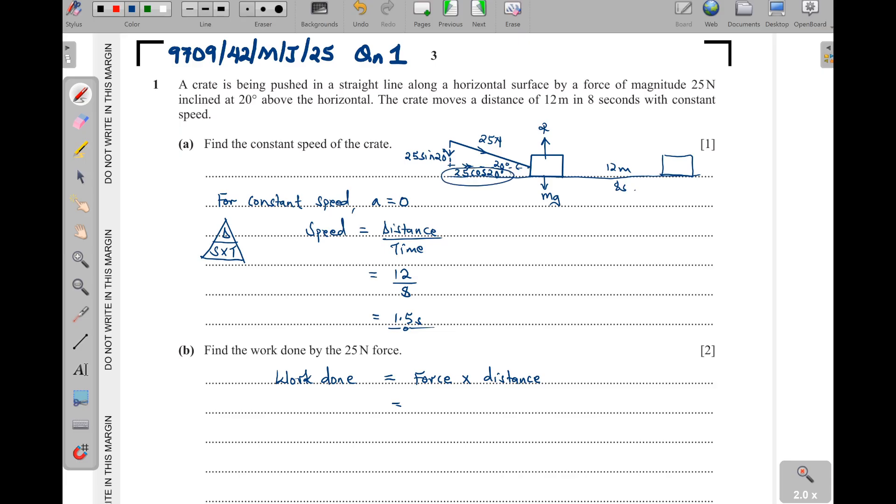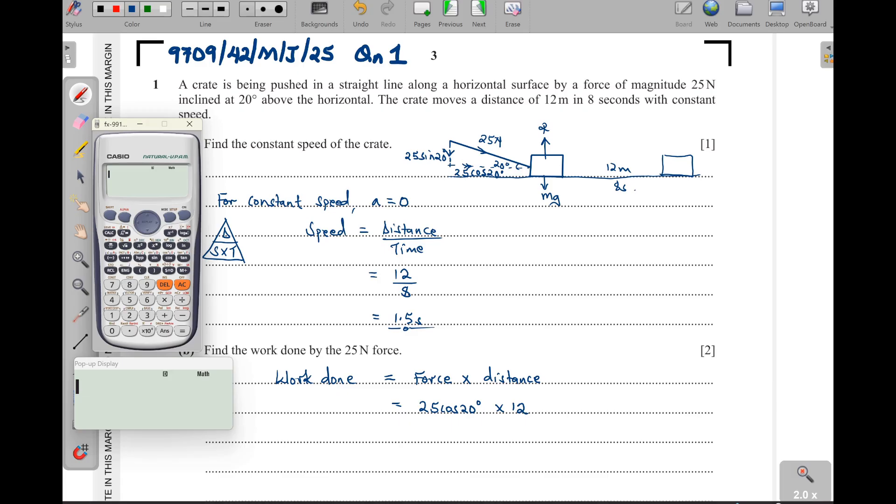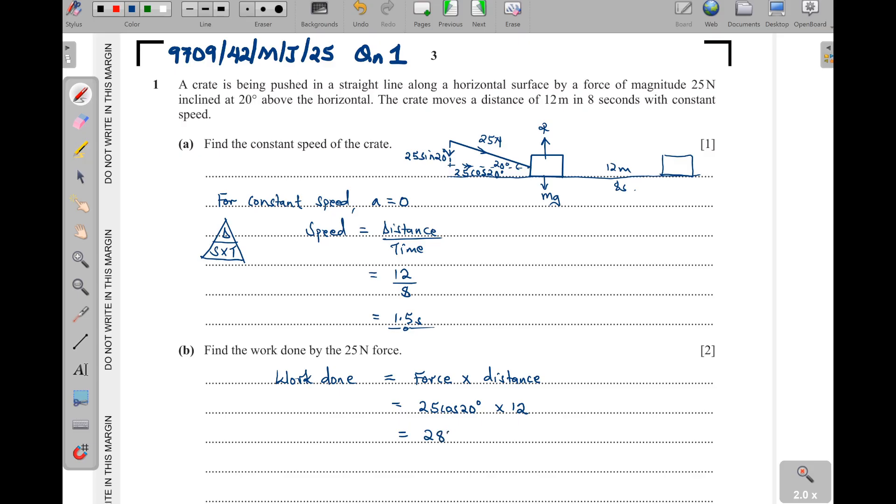So the force, it is not the 25. The force that is going to take this particle here is this horizontal component. So that is 25 cos of 20. Then times the distance, which is 12. Now when we multiply this, what do we get to 3 significant figures? 12 times 25 cos of 20. Make sure your calculator is in the degree mode. That one gives us 282 joules to 3 significant figures.